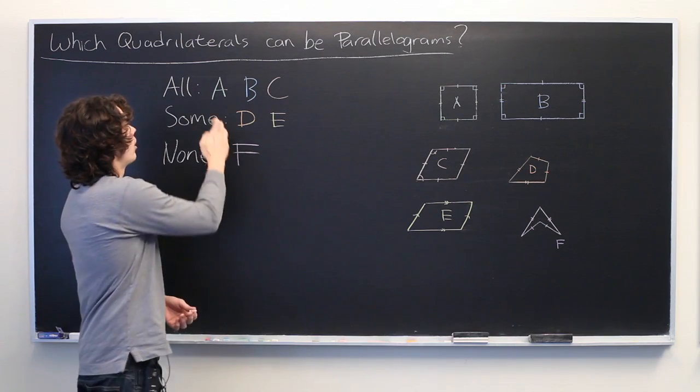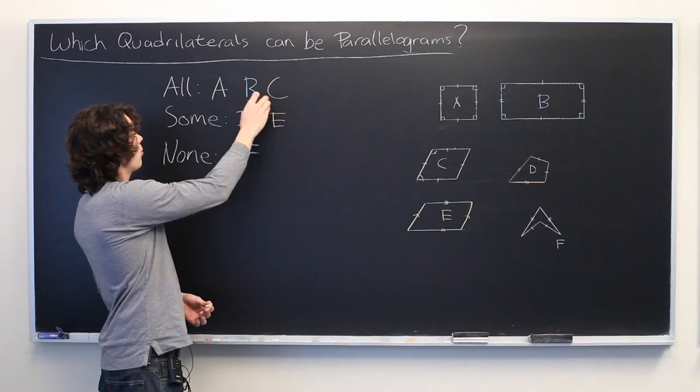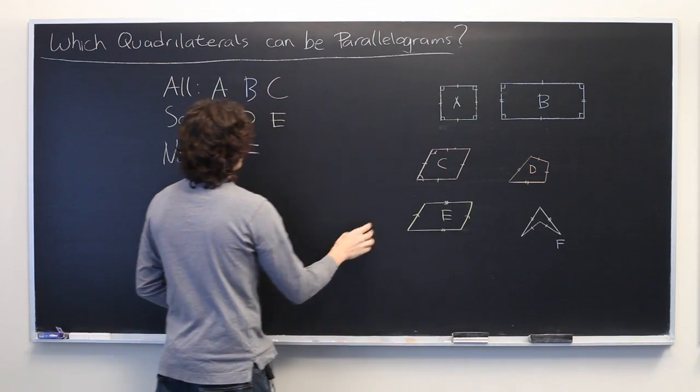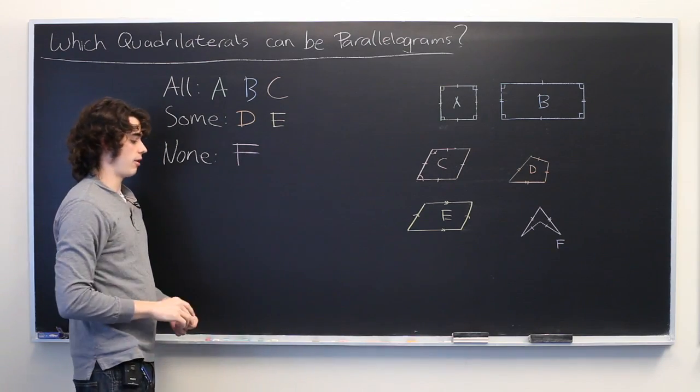So, there we have it. Squares, rectangles, and rhombi are always parallelograms. Kites and trapezoids can sometimes be parallelograms. And chevrons are never parallelograms.